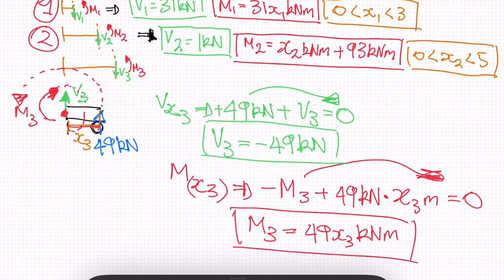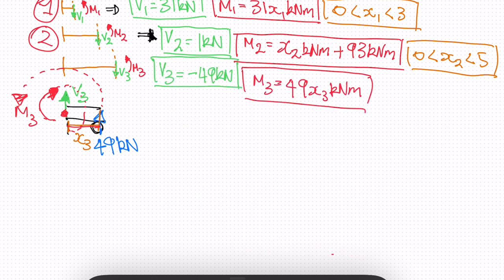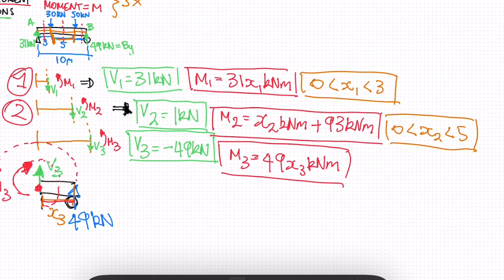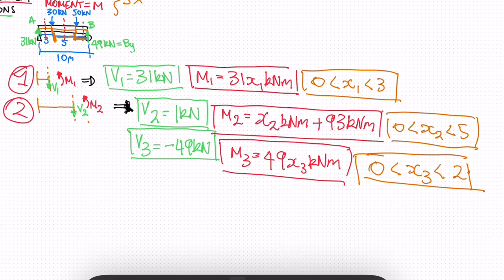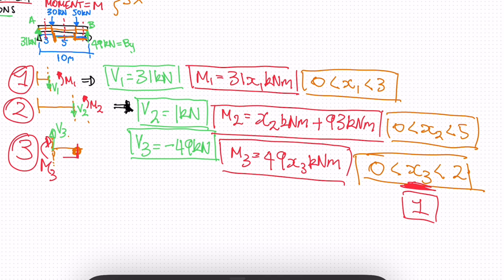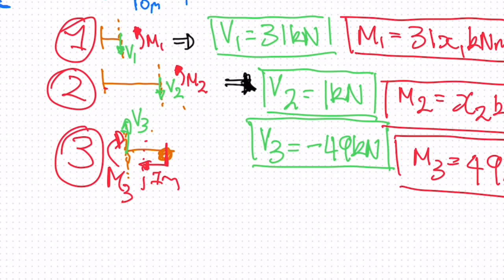We've now found all three shear and moment functions for this beam. One important thing to note: the third section was analyzed from the opposite side, so x3 starts from the right reaction point. If you plug in one meter, it analyzes one meter from that reaction. The other shear and moment functions are analyzed from the left side. This directional distinction is really important to keep in mind.